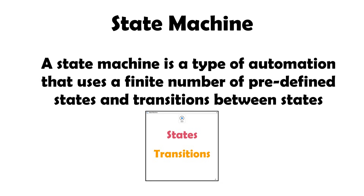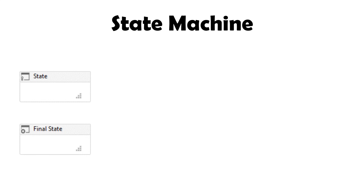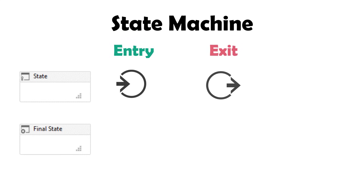Let's now understand state and transition in detail in UiPath. In UiPath we have two kinds of states: state and final state. A state is a normal state which can be used in the process and has other states after it. A final state is a state which is set at the end of the process — after this state there is no other state. A process must contain at least one final state, but it could also have more than one. Each state has two sectors: entry and exit.